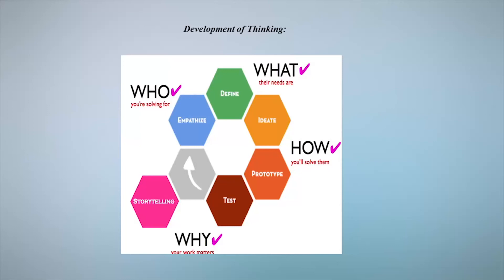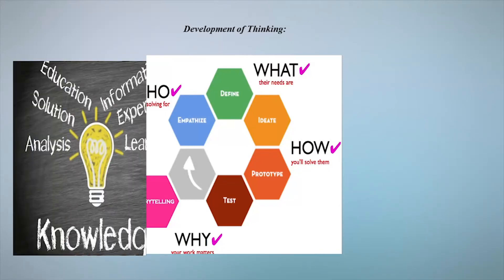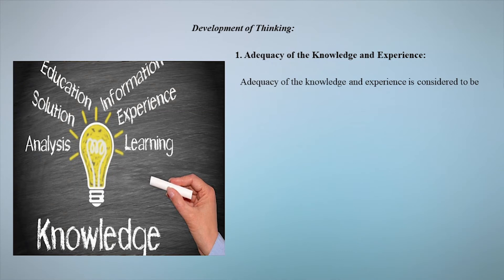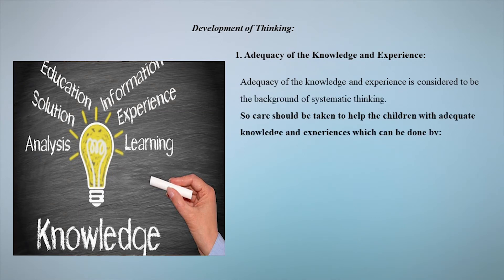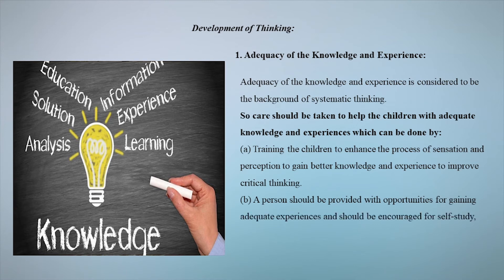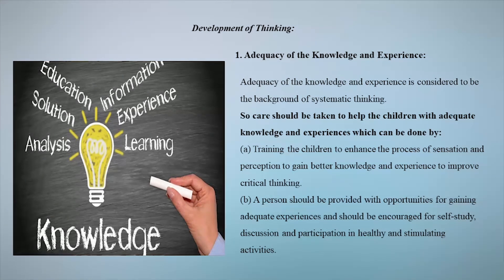There are few methods which help to develop thinking through training. The first is adequacy of knowledge and experience, which is considered the background of systematic thinking. Care should be taken to help children with adequate knowledge and experiences by training them to enhance the process of sensation and perception to gain better knowledge and experience and improve critical thinking.